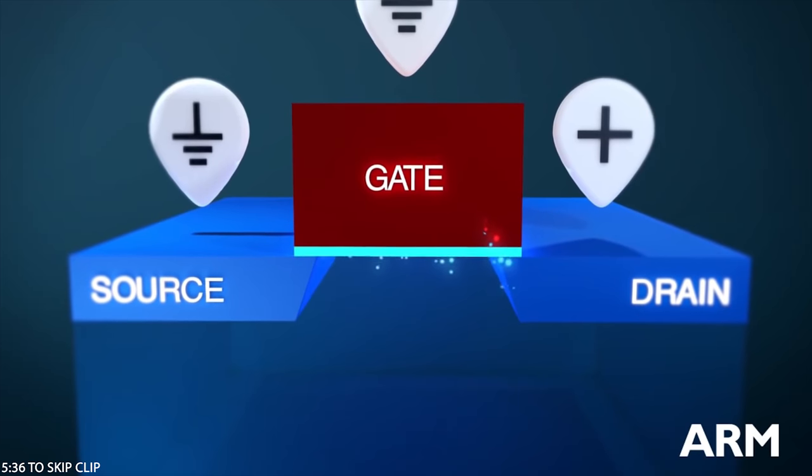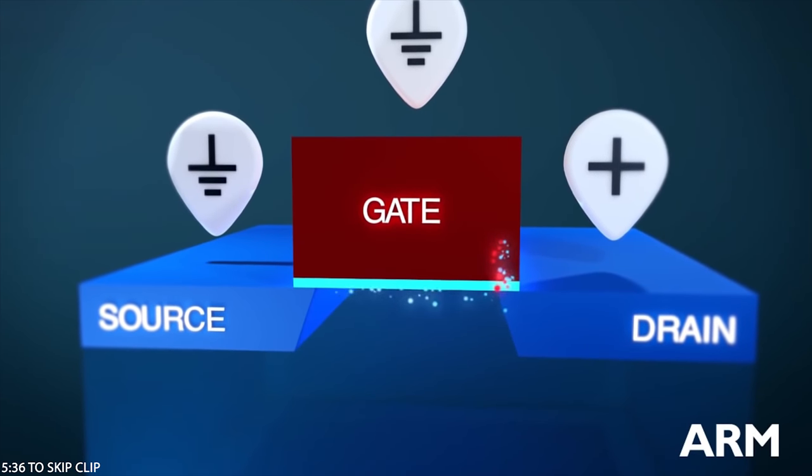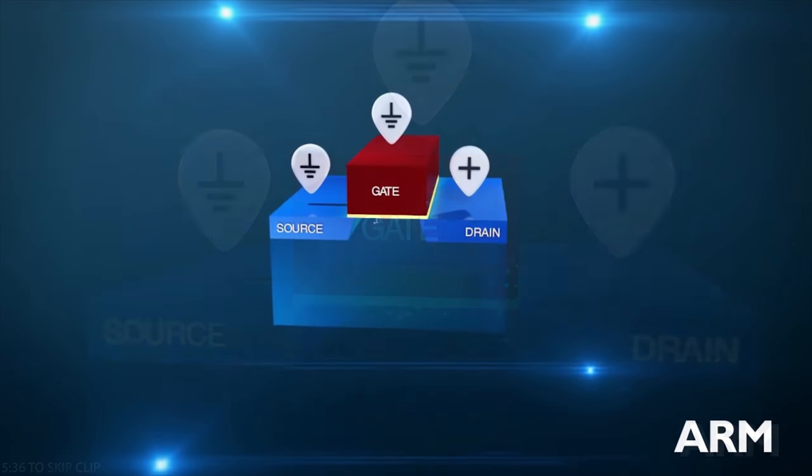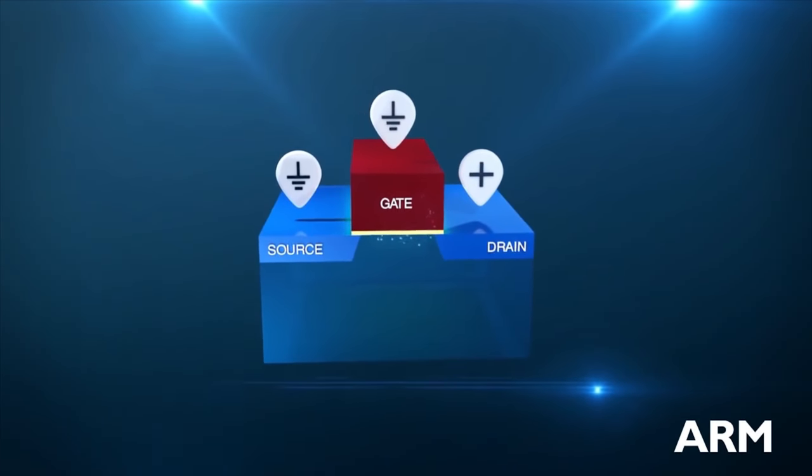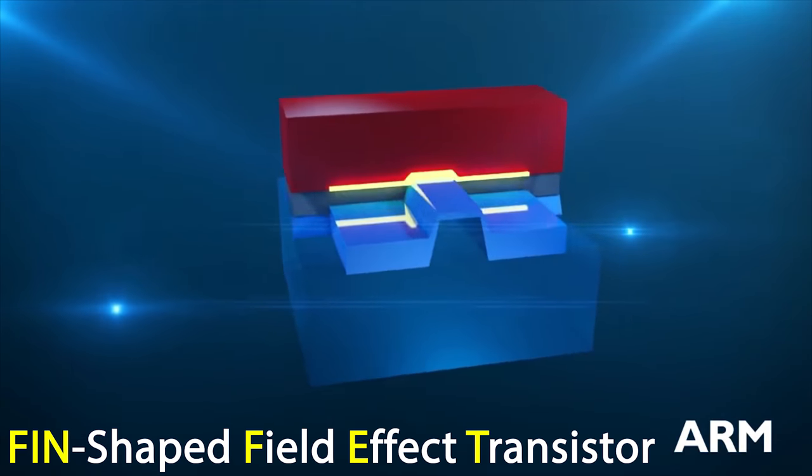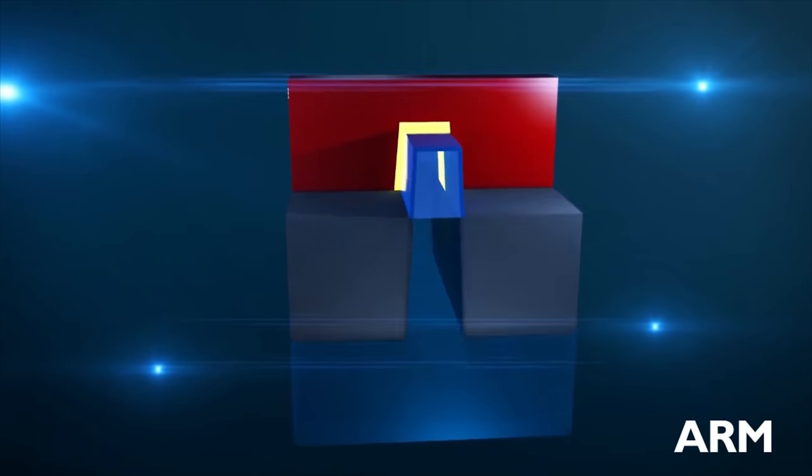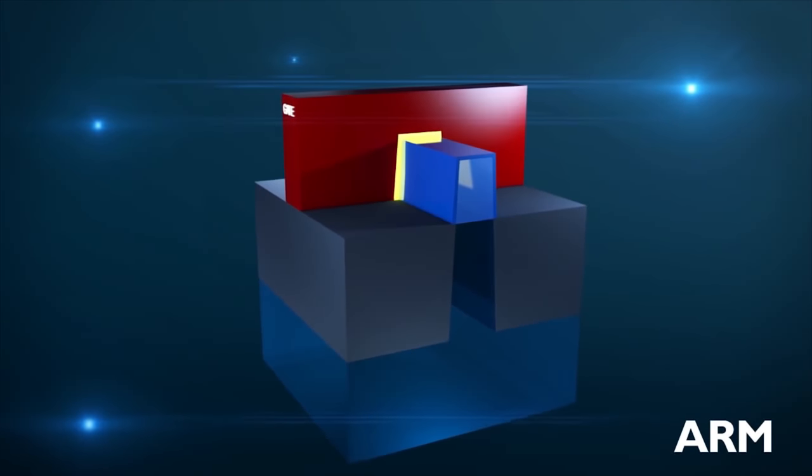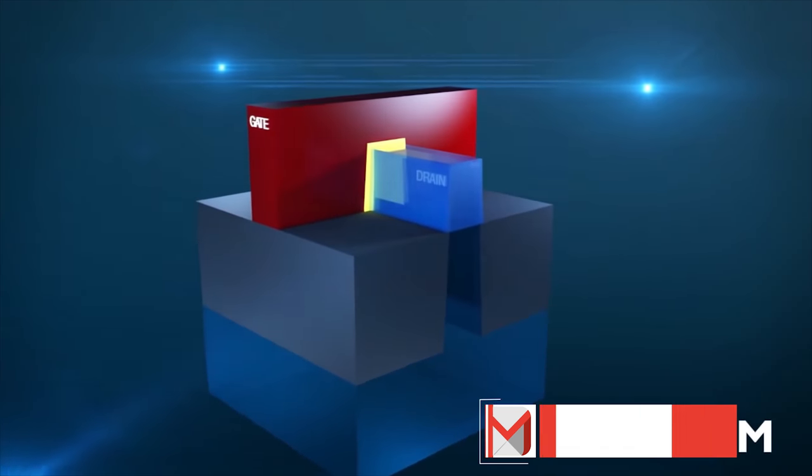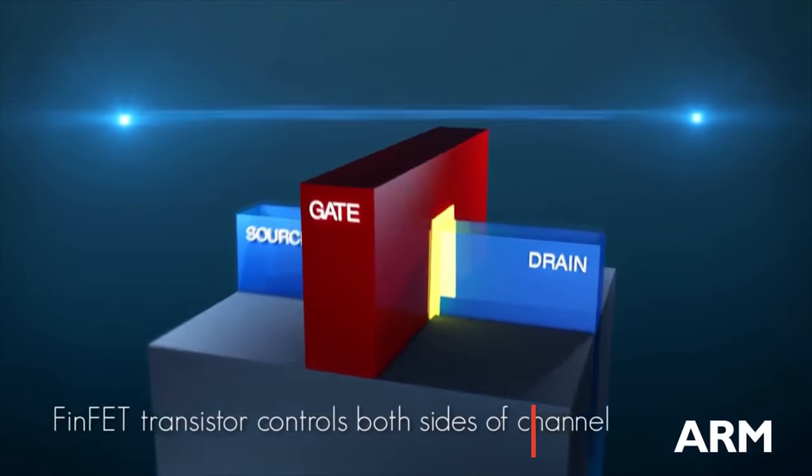Unfortunately, this leakage current increases with every generation of transistor and represents a growing proportion of power consumption. To solve this, a radical redesign of the transistor has taken the industry by storm, the FinFET. The fin-shaped field effect transistor essentially takes a typical 2D planar transistor and reorients the gate vertically to make it 3D. This allows more gate control since now the gate of the transistor covers the top and sides. This therefore reduces the leakage induced by quantum tunneling.